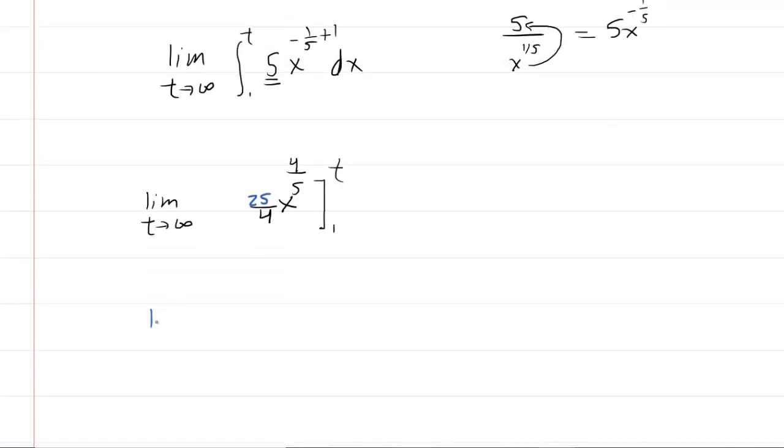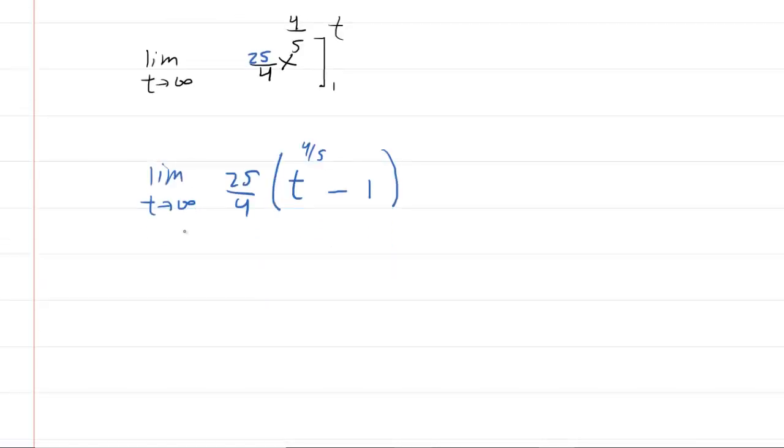And now we can plug in the upper bound. The upper bound is t. So we'll have 25 fourths. We're actually going to factor out the 25 fourths. So we'll have t raised to the 4 fifths. And then we plug the lower bound in and subtract. So we're going to have minus 1 to the 4 fifths. But 1 to the 4 fifths is just 1. So far so good. Now we can actually basically plug infinity in for t. So we would have 25 fourths multiplied by infinity to the 4 fifths minus 1. Now we kind of have to figure out what infinity to the 4 fifths is.